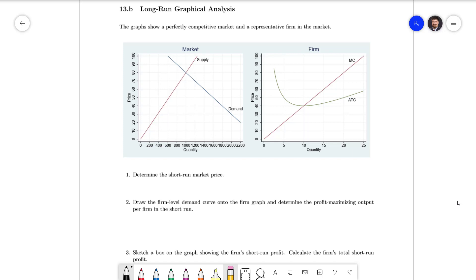We're given side-by-side graphs of the market and a representative firm in that market. First we want to know what is the short-run market price. For that we need to figure out the price where quantity supplied equals quantity demanded. That's just the point where our supply and demand curves cross, and so that's going to be an equilibrium price of 80.